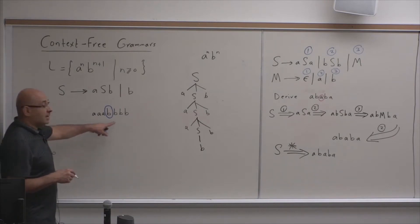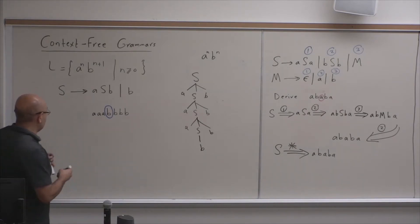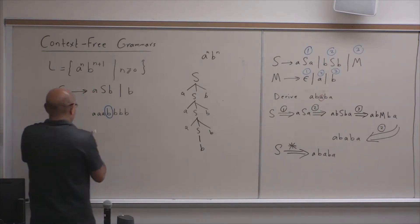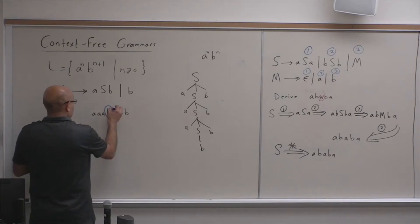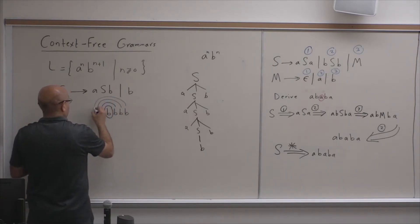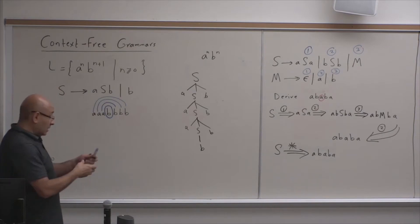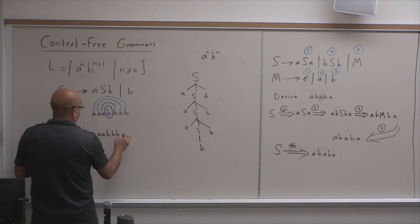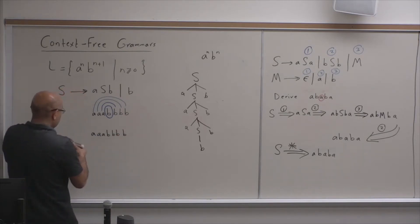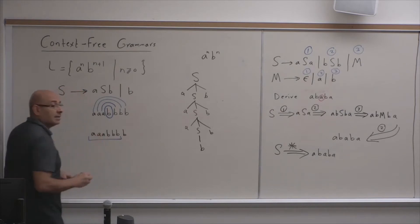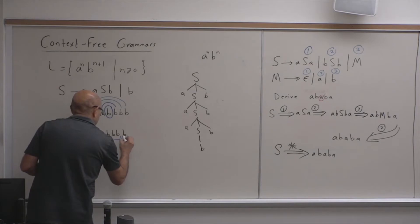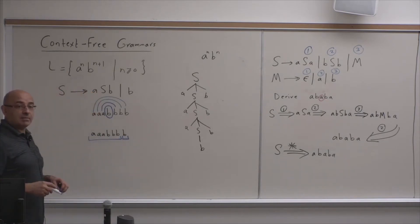There is another way of thinking of this. Instead of thinking of this as b being the symbol in the middle surrounded by an equal number of a's and b's, you can also think of a string like a, a, a, b, b, b, b as a string with an equal number of a's and b's followed by a b. So you can think of the b as something that comes after — two different ways of thinking of this string.